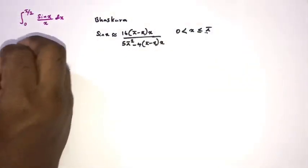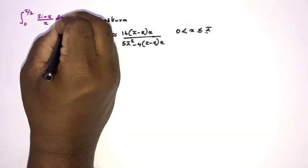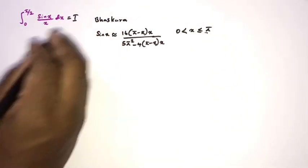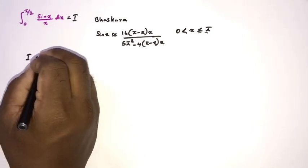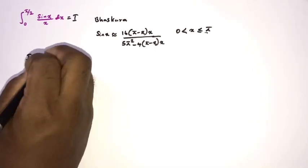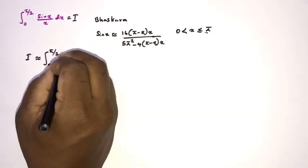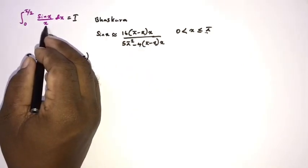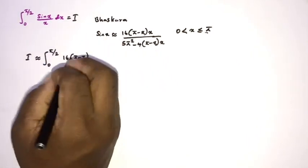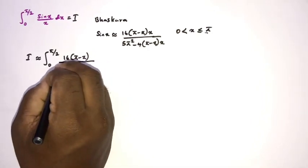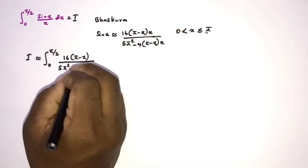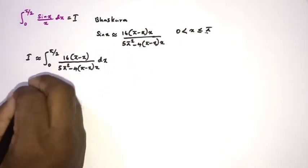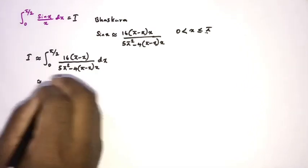Our integral is the integral from 0 to π/2 of sin(x)/x dx, and I am going to call this I. So I is approximately equal to the integral from 0 to π/2, where instead of sin(x) we have 16(π−x)x, but we also have x in the denominator, so the x cancels, leaving 16(π−x) over 5π² minus 4(π−x)x, dx.